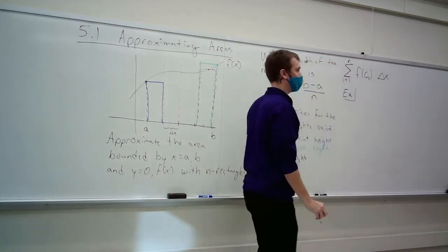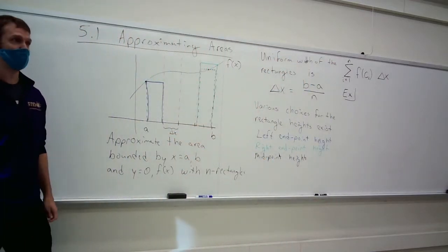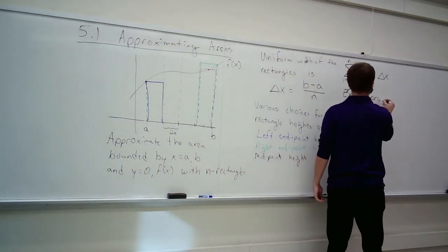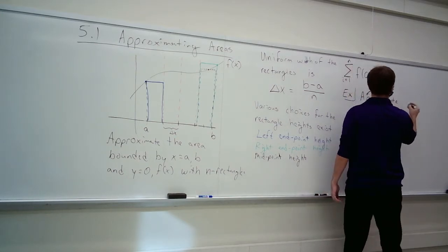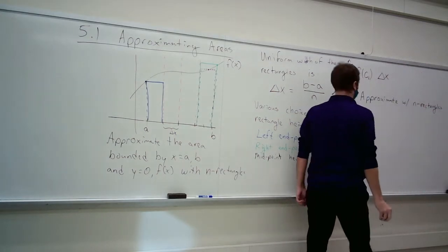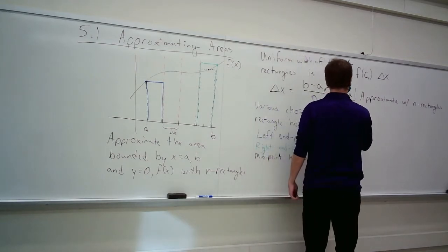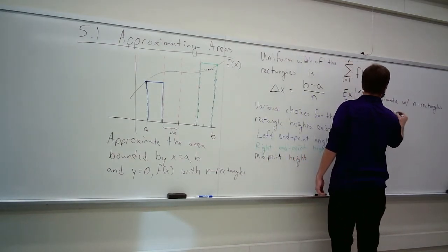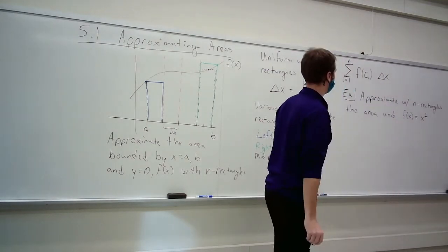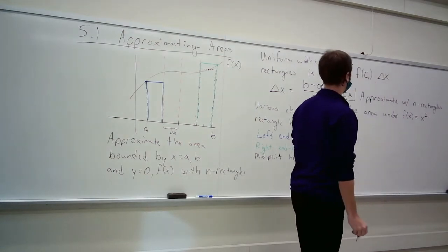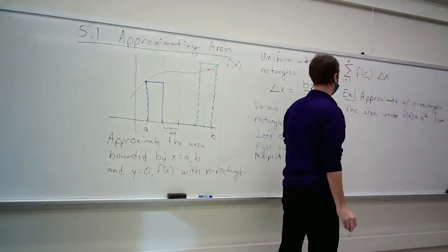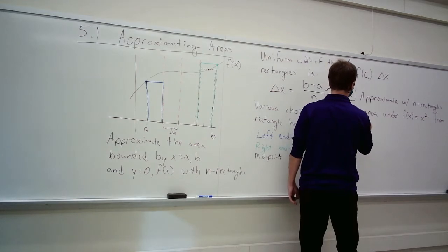Let's redo what we did last time, going real fast. We'll approximate with n rectangles the area under x² from x = 0 to x = 1. We need to decide: left endpoints, right endpoints, or midpoints?